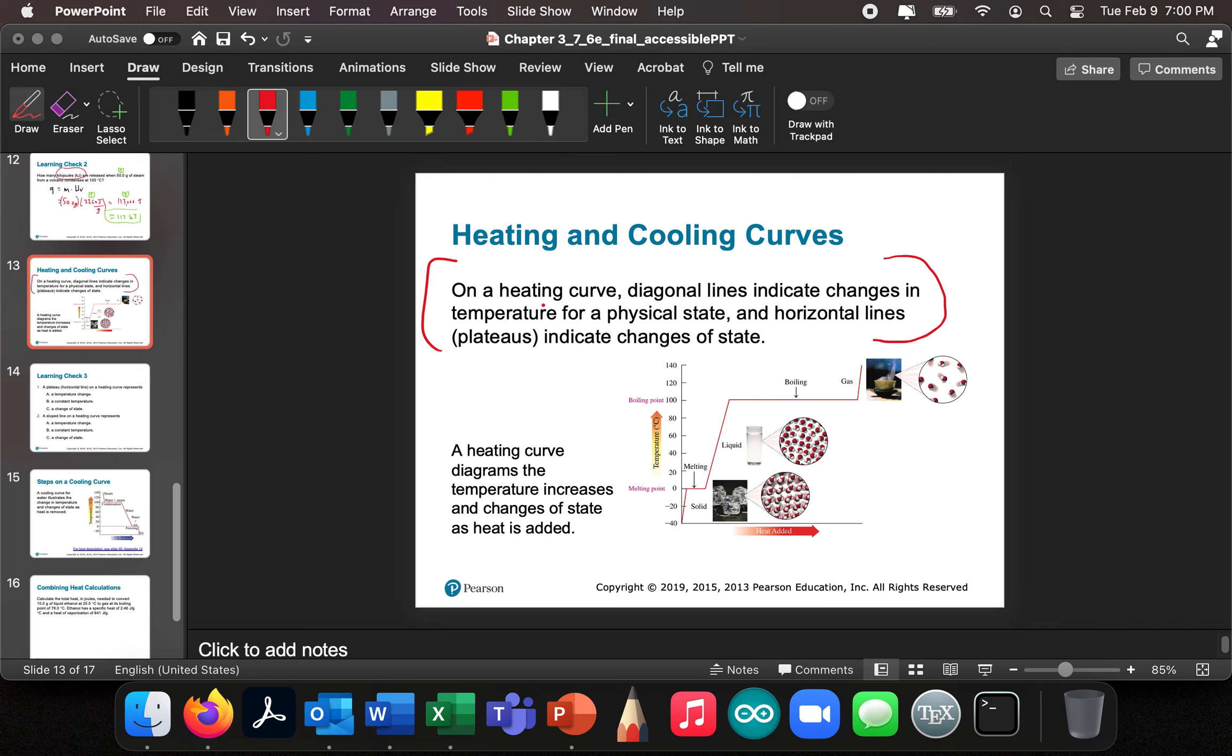I'm sorry, let me say it again. Diagonal lines indicate changes in temperature, and plateaus indicate changes in state. And this is going to make sense if you can think about it. It's a little bit scary. There's a lot of pictures here and such, but look at here.